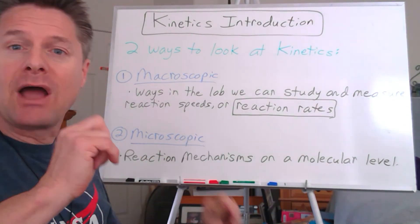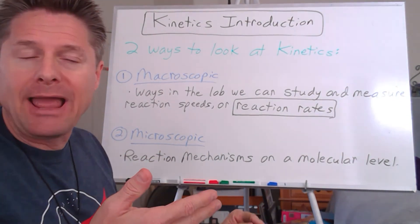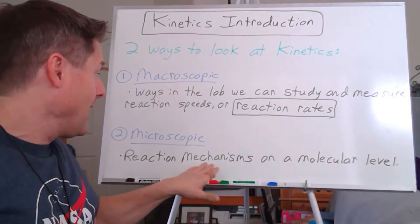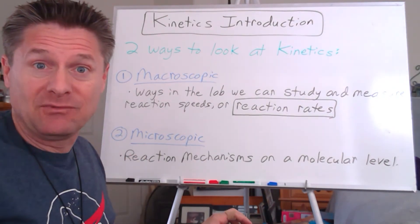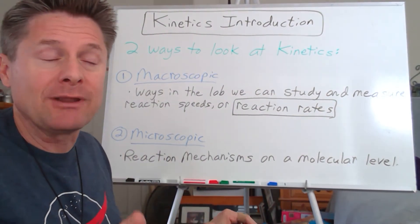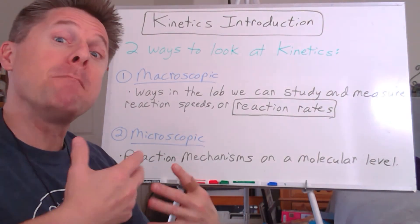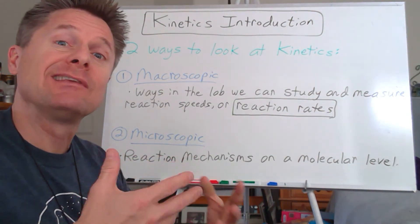Once we got that down and we do the mathematics behind reaction rates, then we're going to focus on the microscopic view where you can't go do this in lab. We're going to look at things down at an atomic or molecular level, and we want to study specifically reaction mechanisms. You're going to do this a lot in organic chemistry, but this is the first introduction in general chemistry.